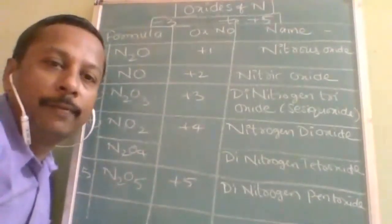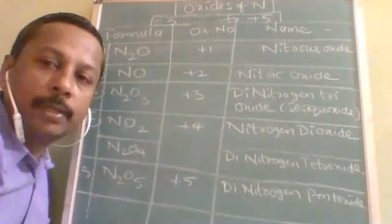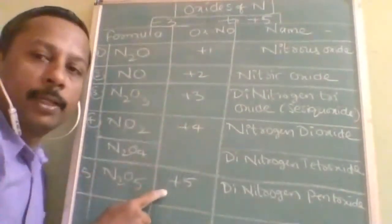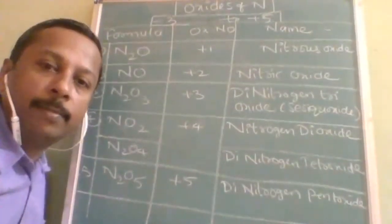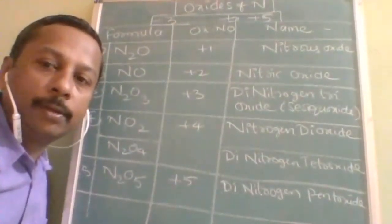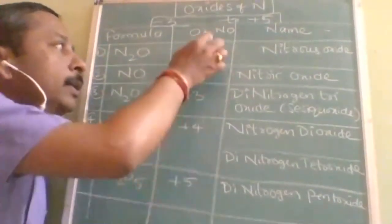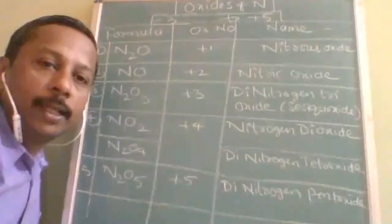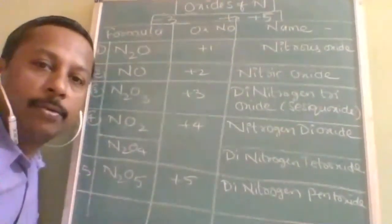You should get a doubt here. If you're not getting a doubt now, you will not be able to answer the conceptual questions, because conceptual questions will be more. The question will be: why does nitrogen show only positive oxidation state in its oxides? The answer is: among nitrogen and oxygen, nitrogen is less electronegative and oxygen is more electronegative. Once oxygen is more electronegative, oxygen will be minus and nitrogen will obviously be plus.